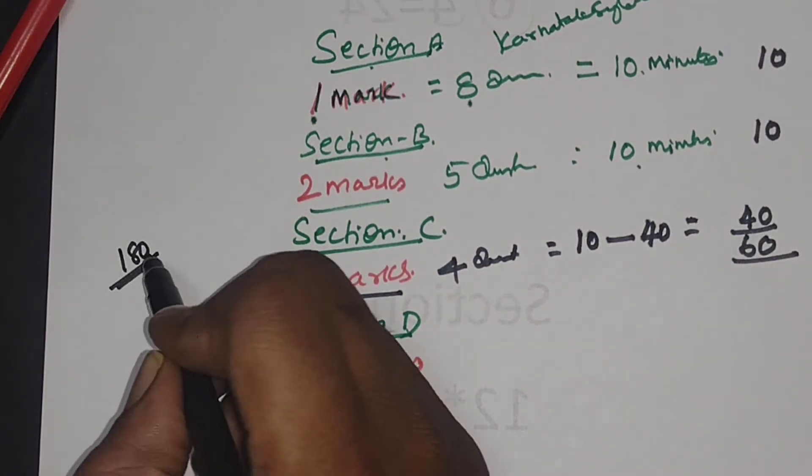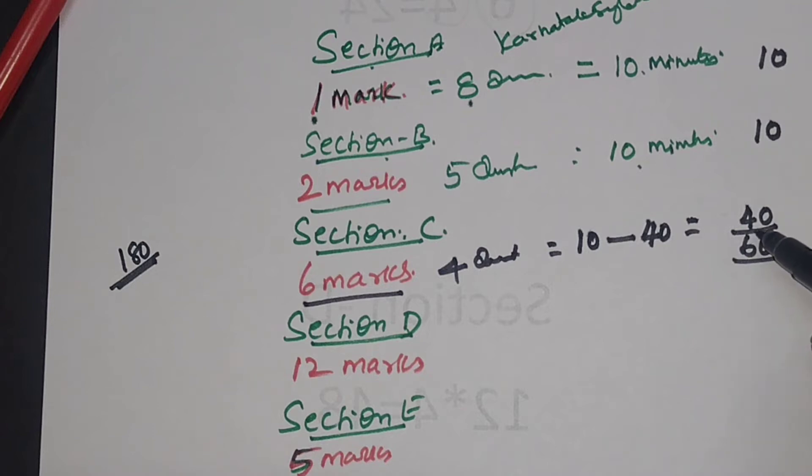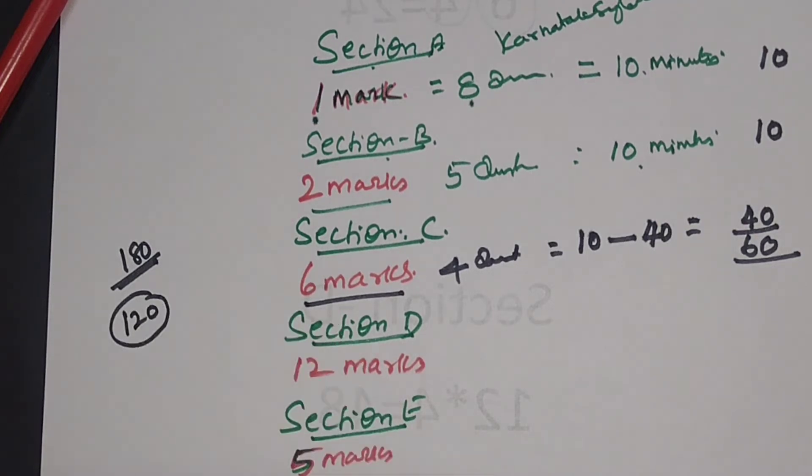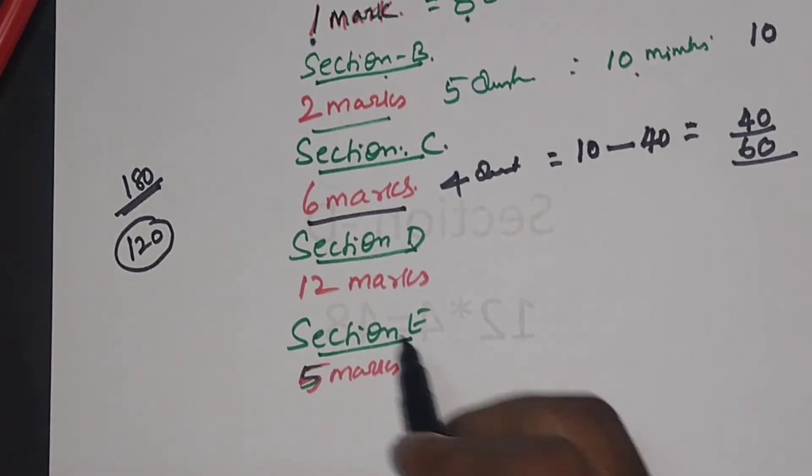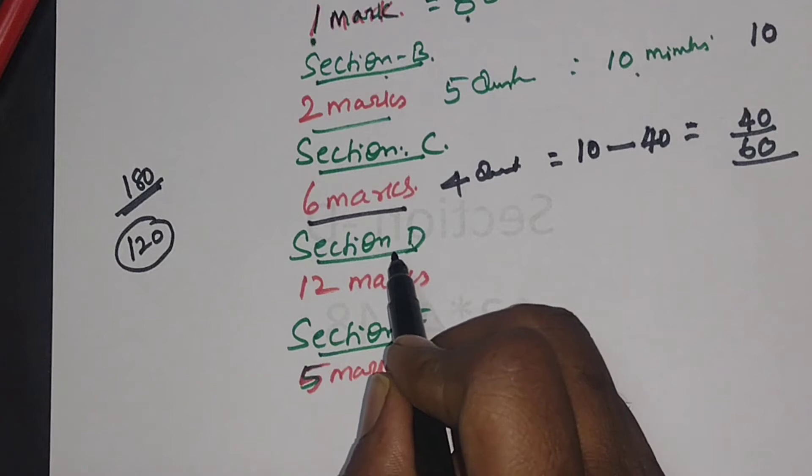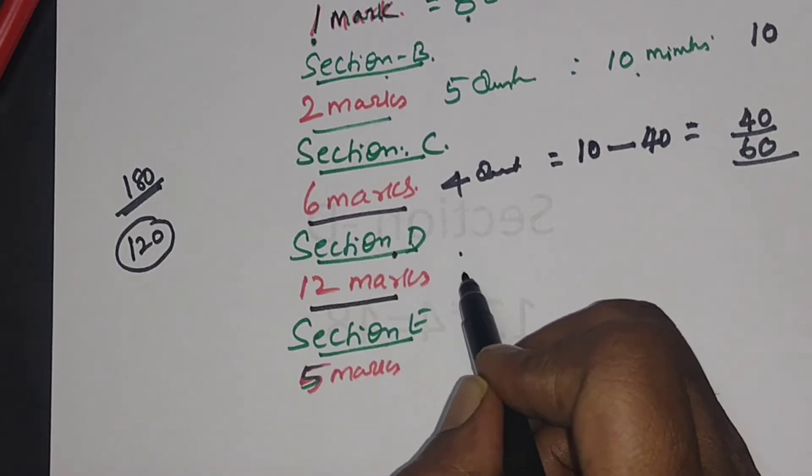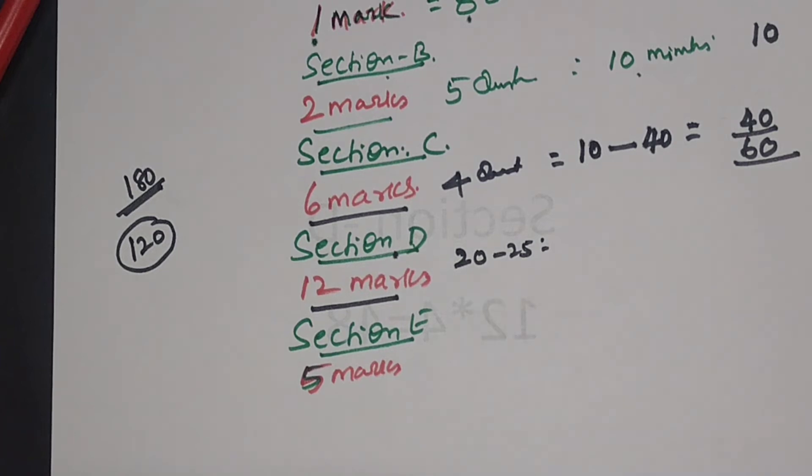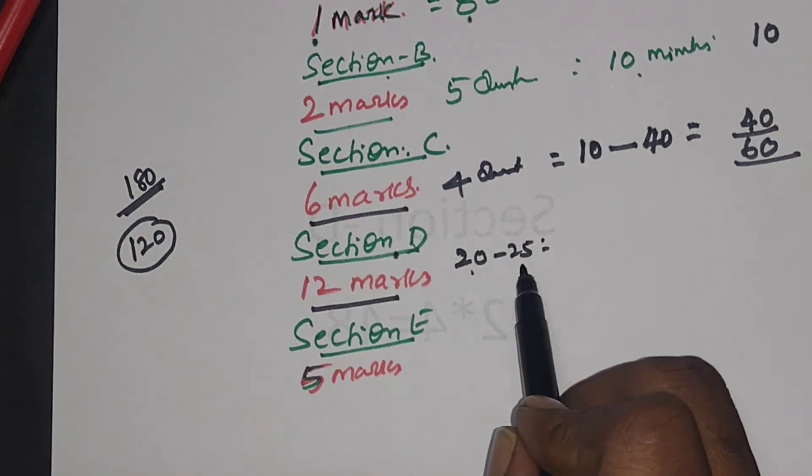Now you will come to know the reason why I am saying minimize the time. You have 120 minutes time remaining. Out of 120 minutes, maximum you should spend in section D, 12 marks, between 20 minutes to 25 minutes per question.